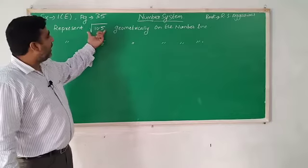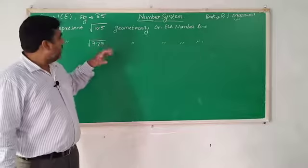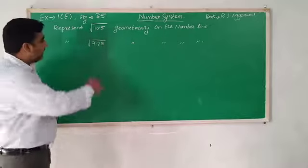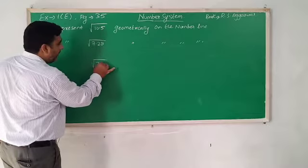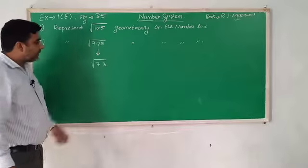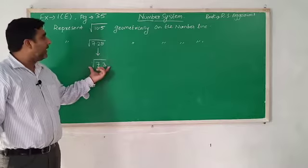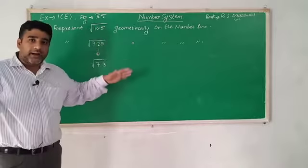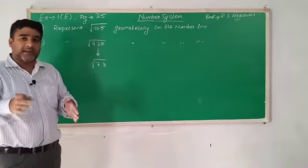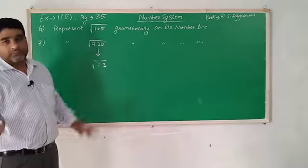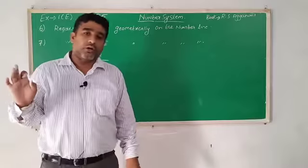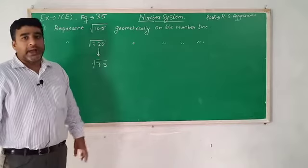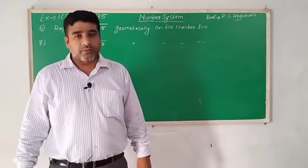Your homework: represent root 10.5 on the number line, and root 7.28 on the number line. For 7.28, since we can't precisely make 0.28 on a scale, we round it off to 7.3. So represent under root 7.3. The procedure: first make a line of 10.5, then add 1 cm ahead, and so on. That will be all for today, thank you.